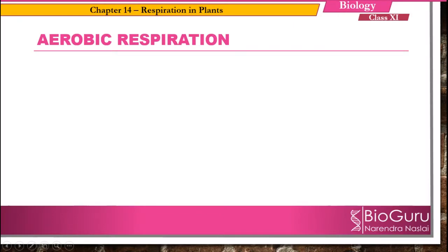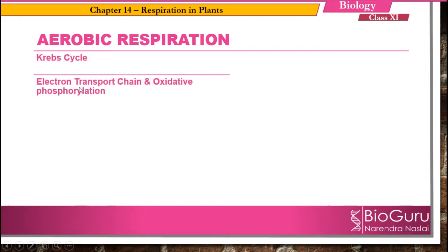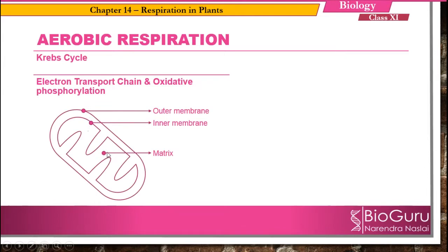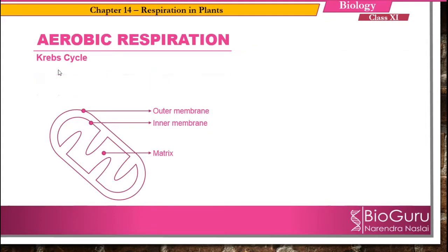Hey everyone, this is Narendra and you're watching my channel Bio Guru. Today in this video we are going to study about aerobic respiration. Aerobic respiration is the breakdown of food material or oxidation of respiratory substrate in presence of oxygen. Aerobic respiration includes two events: one is the Krebs cycle, and the other is the electron transport chain and oxidative phosphorylation. Both these events take place in the mitochondrial matrix. In this video we are going to focus on the Krebs cycle.